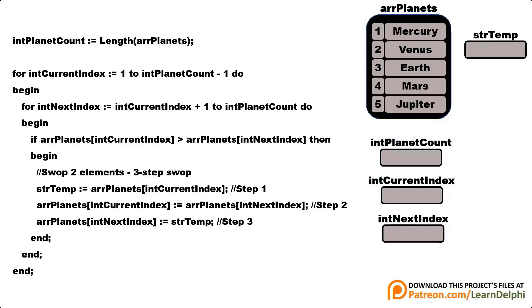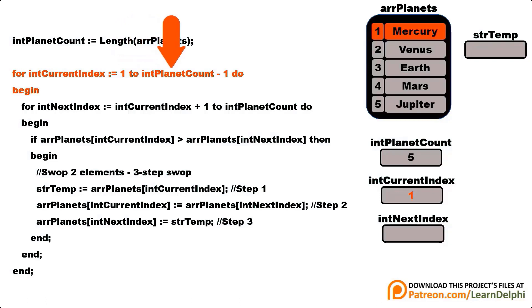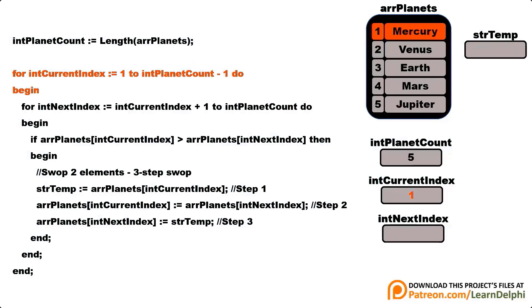You will also need an integer variable to store the size of the array, another integer to keep track of the outer for loop's current index, and a third integer for the nested inner for loop's index used in the comparison. Before starting comparisons, we first get the length of the array and store it. The outer for loop starts at 1 and its upper limit is the size of the array minus 1, so it cycles from index 1 to 4. The reason for not cycling the whole array is that you must always compare one name with another, and at the last index there is nothing left to compare.